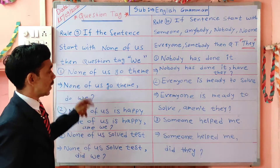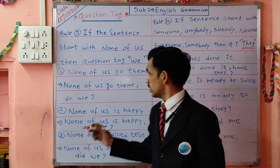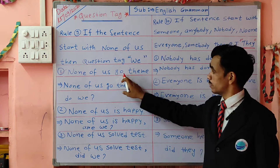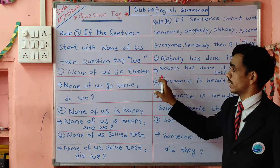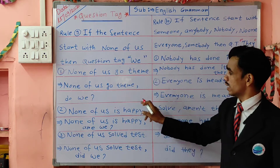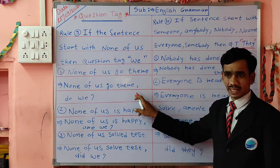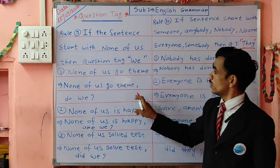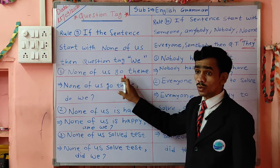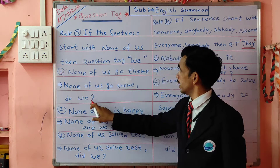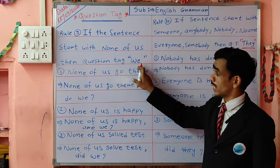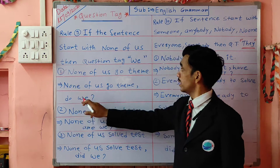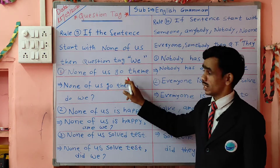We will see examples now. Example number one: 'None of us go there.' This is simple present tense because V1 is there. So the answer is: 'None of us go there, do we?' Write as it is, then give a comma. Because of 'go' (V1), we take 'do.' And we take 'we' as per our rule since 'none of us' is there. It's not negative, that's why I take 'do we.'